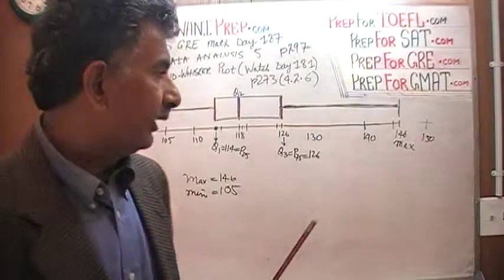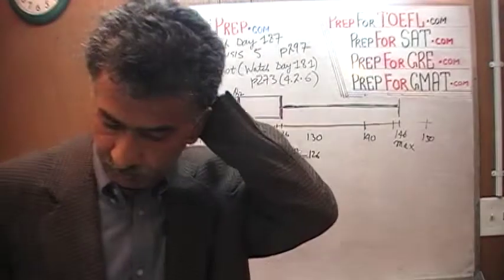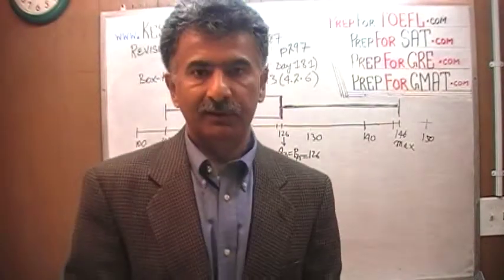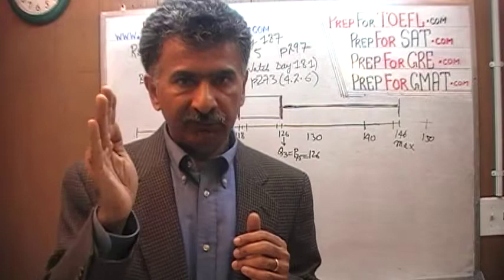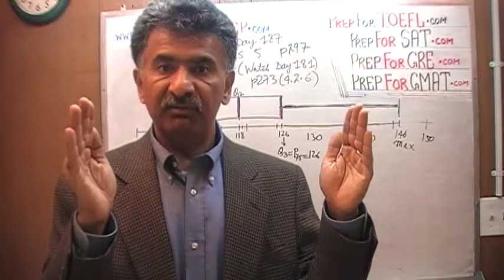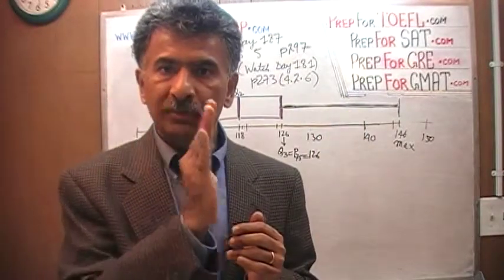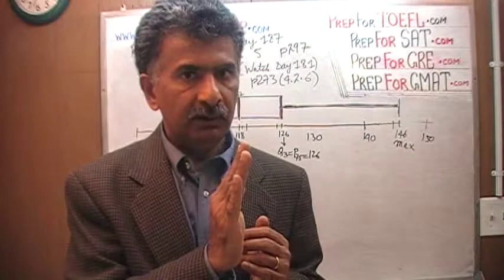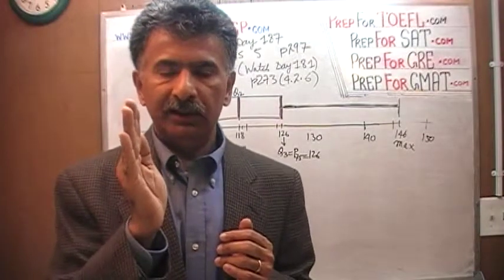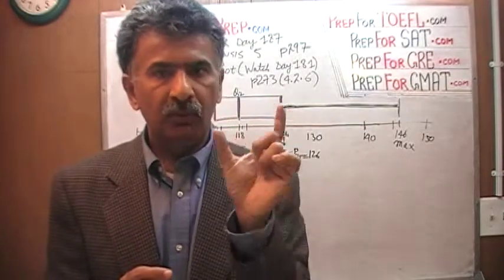What we are given here is a box and whisker plot, which I have reproduced on the blackboard. A box and whisker plot gives you several bits of information about your data set. You can tell where the data begins and where it ends, giving you the minimum and maximum observations, and from those two things we can figure out the range. It also divides the data into quartiles — four equal parts.